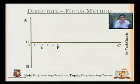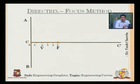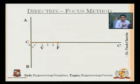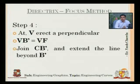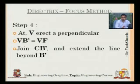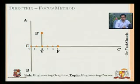Dividing CF into five equal parts: 1, 2, 3, 4, and 5 — with 5 being my focus. The eccentricity is 3/2, so three divisions from F and two divisions from C. The position of V depends on the eccentricity ratio given: for example, if eccentricity were 4/1, V would be marked at point one from C. So V is the vertex — the point through which the hyperbola passes in this method.